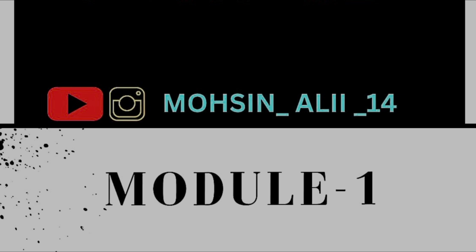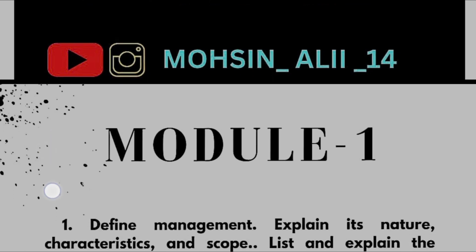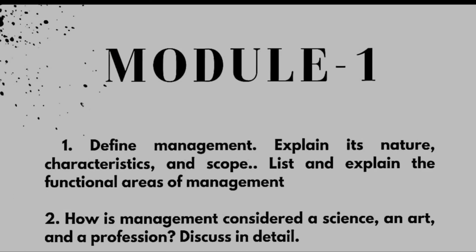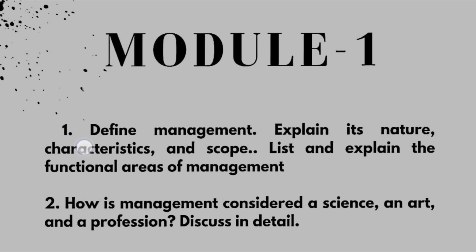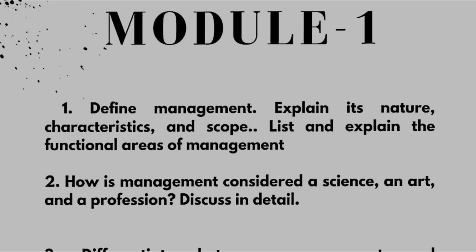Let us discuss module-wise important questions. The first, second, and third modules are the passing ones — they are easier and questions from these are frequently asked. Your 3 modules are similar to the 18-scheme subject Economics and Management, so you can refer those papers as well. In Module 1, the first question is: Define management, explain its nature, characteristics, and scope.